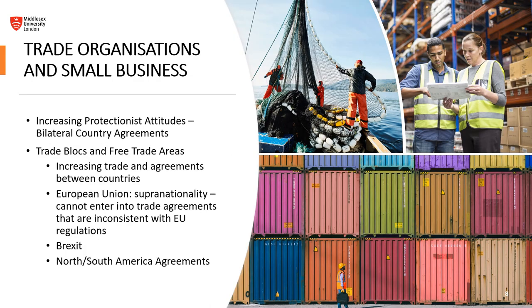As it pertains to trade organizations and small business, the key areas include increasing protectionist attitudes, bilateral country agreements, trade blocks, and free trade areas — all aimed at increasing trade and agreements between countries to build economies and facilitate trading of raw and manufactured resources. The European Union, for example, is a supra-nationality, meaning you cannot enter trade agreements inconsistent with EU regulations. The EU makes decisions as a whole, versus Brexit, where the UK makes individual decisions based on what's best for the United Kingdom.